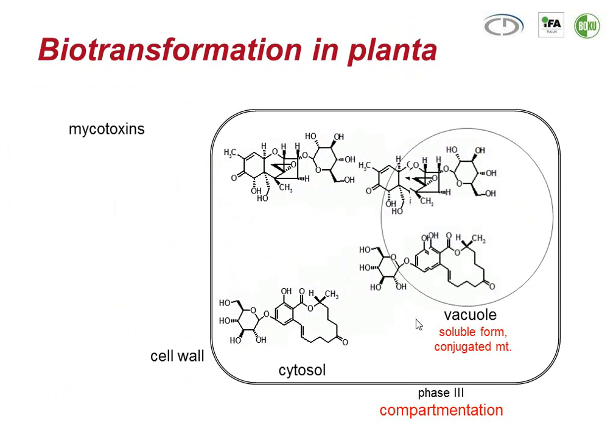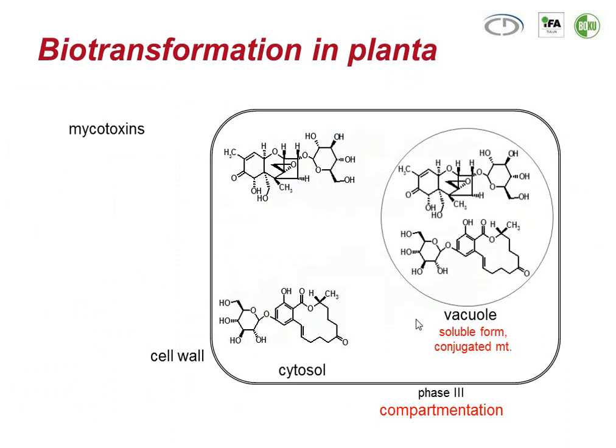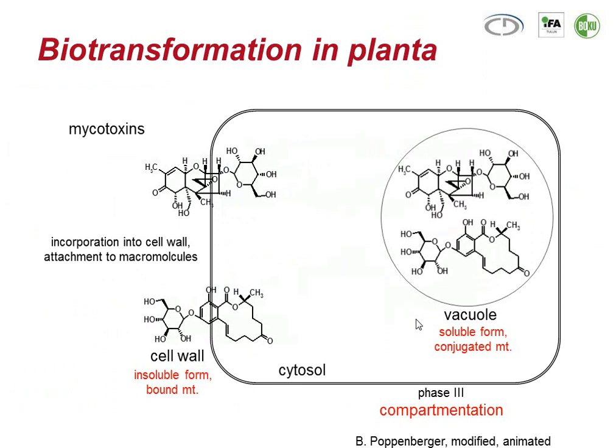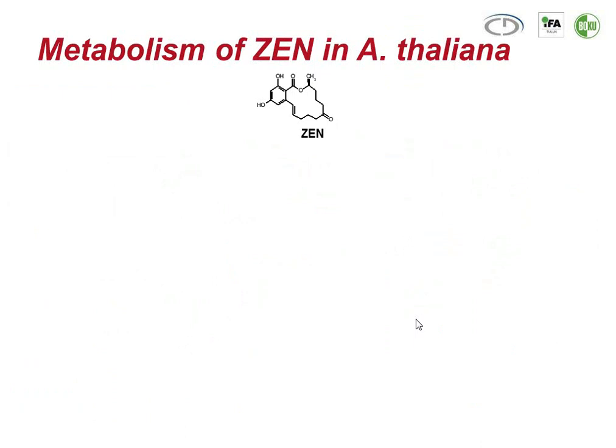These forms are either stored in the vacuole of the plant cell, where they remain in soluble form, or can be further metabolized and incorporated into the cell wall. A term coined in the literature in 1990 is the term 'masked mycotoxins,' speaking of substances which are somehow converted by plants and are usually not detected in routine analysis.